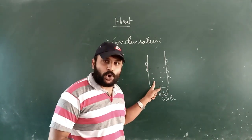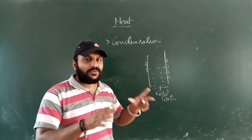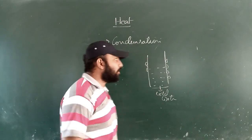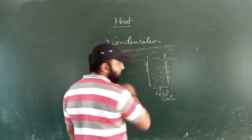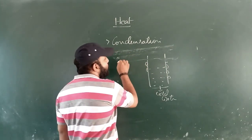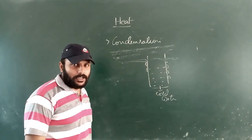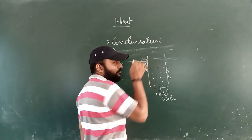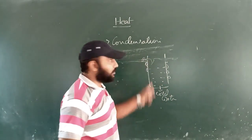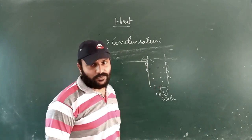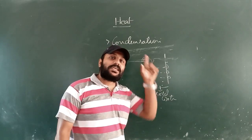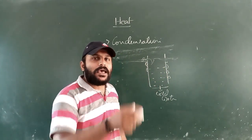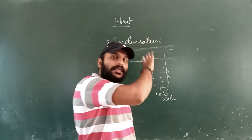The water inside the glass tumbler is a colder object. The air molecules and water vapor in the atmosphere act as the hotter object. Heat flows from the hotter body to the colder body. The water molecules present as vapor in the atmosphere strike the glass tumbler, transfer their energy to the cold water inside, and since the energy decreases, a phase change from gas to liquid occurs.